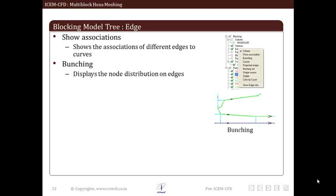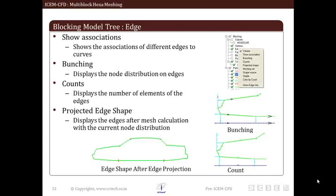By enabling bunching displays node distribution on edges. By enabling count, it shows number of elements of edges. It gives numerical value of bunching. By enabling projected edge shape, it displays edges after mesh is computed with current node distribution. This helps you preview shape of topology to be taken by geometry.